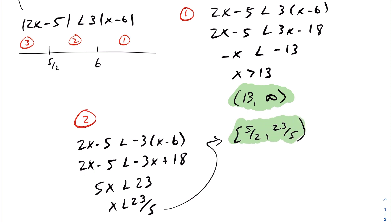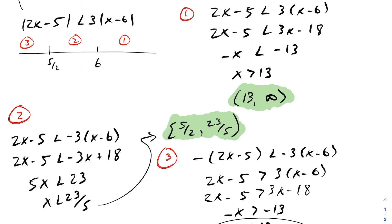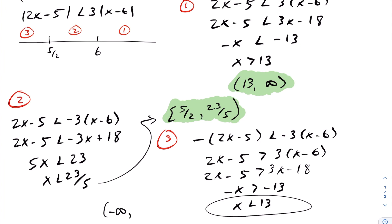For interval three, I multiply across by a minus sign to remove it, which switches the inequality direction. Solving gives x is less than 13. Since x less than 13 holds throughout this entire interval, the complete interval is valid. So the solution set for interval three is from negative infinity up to five halves.